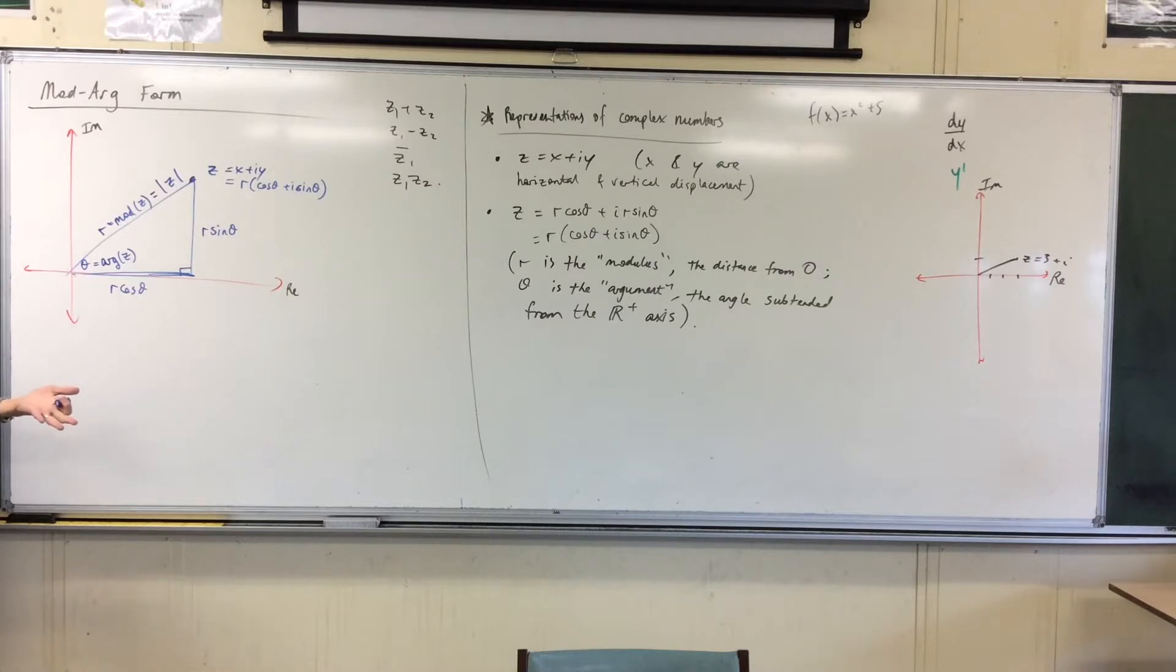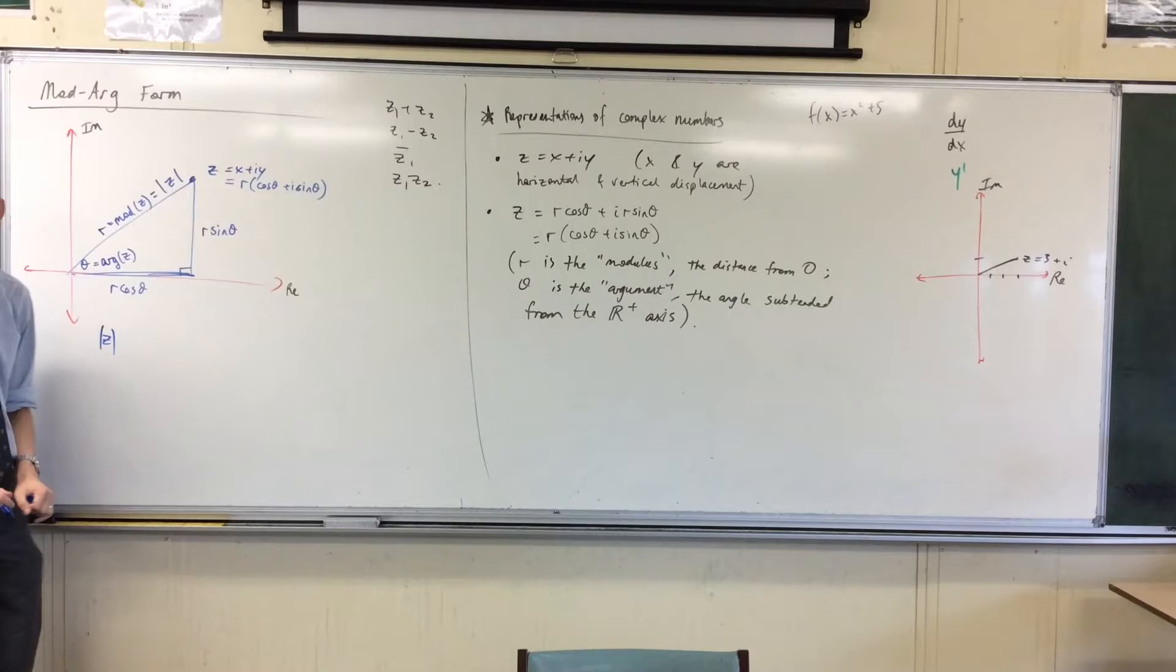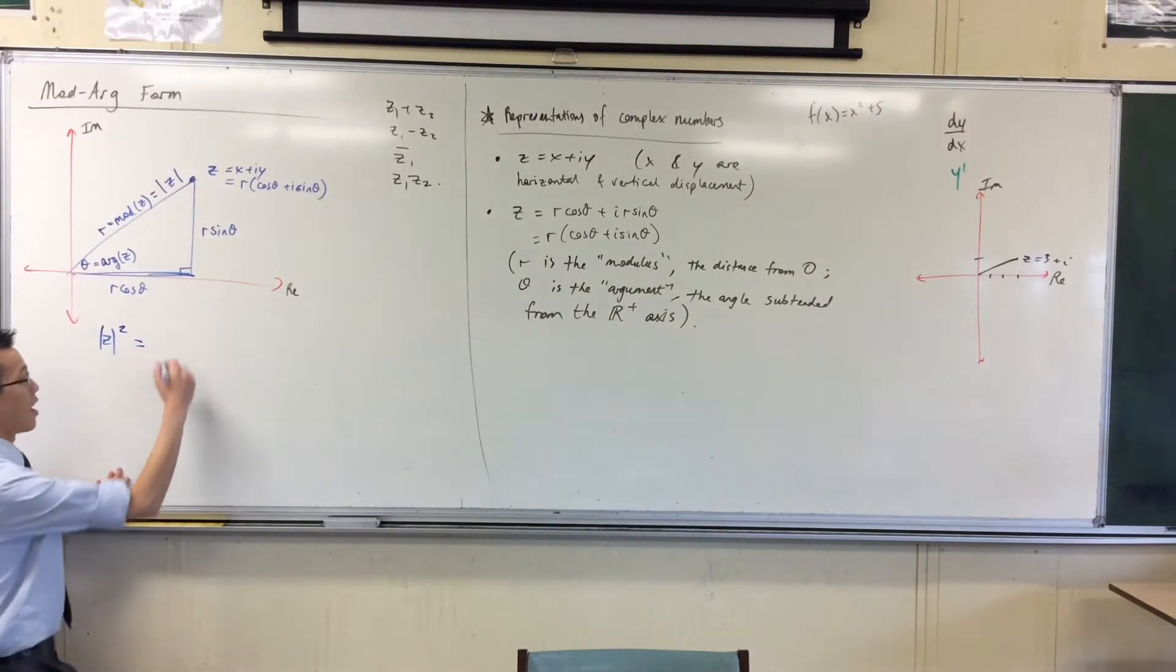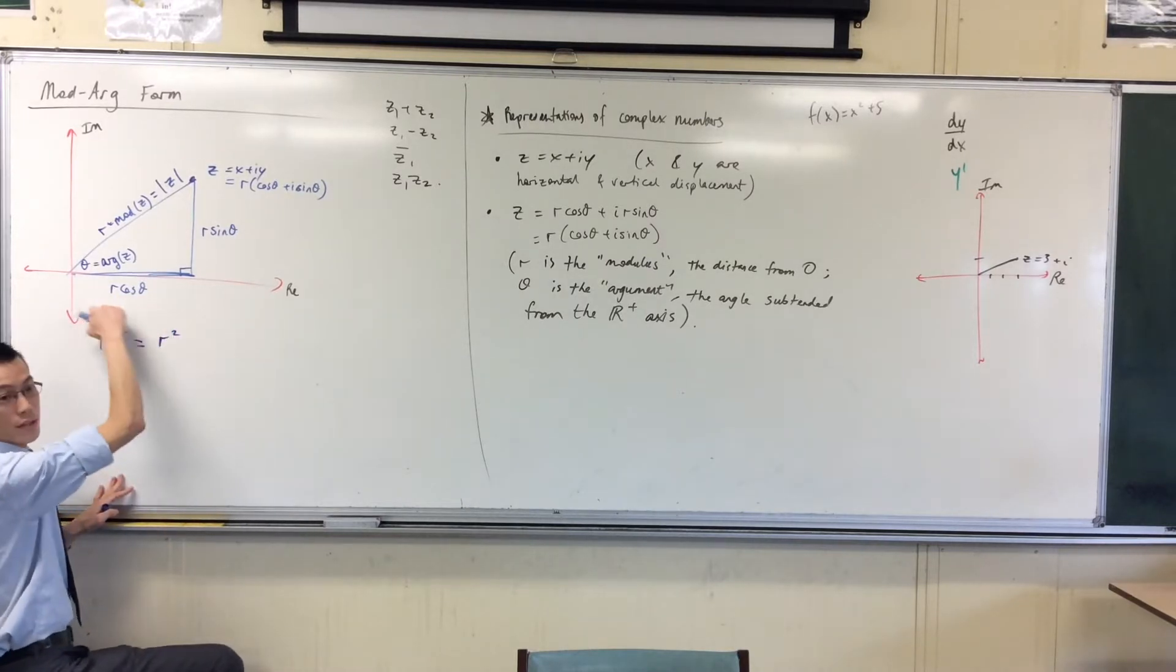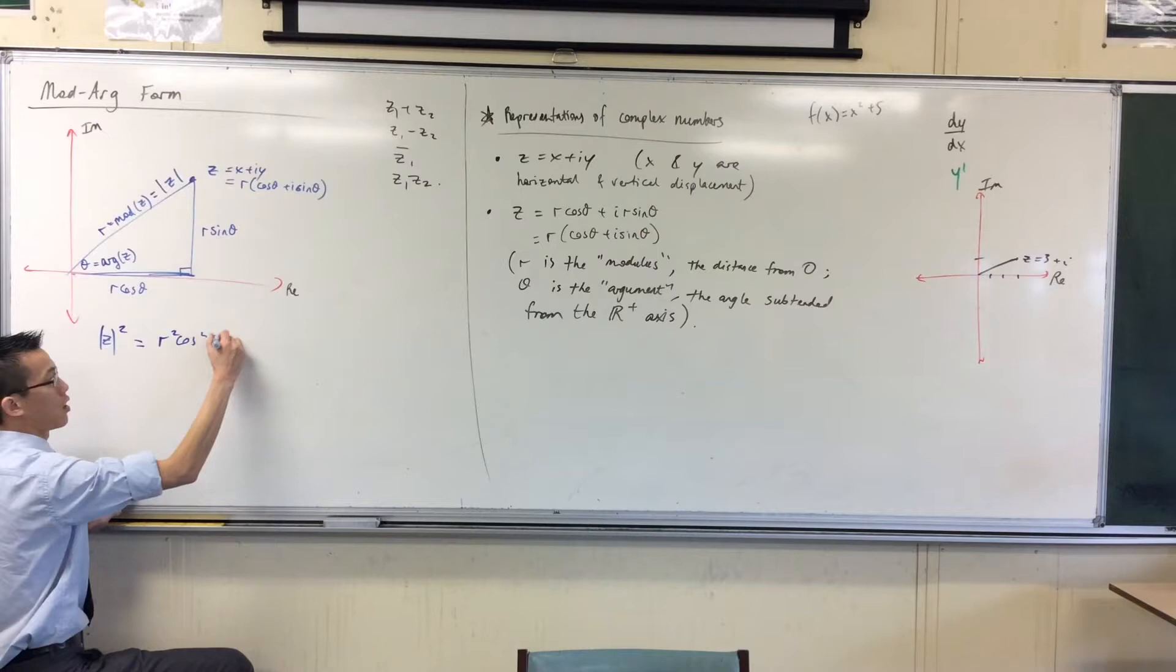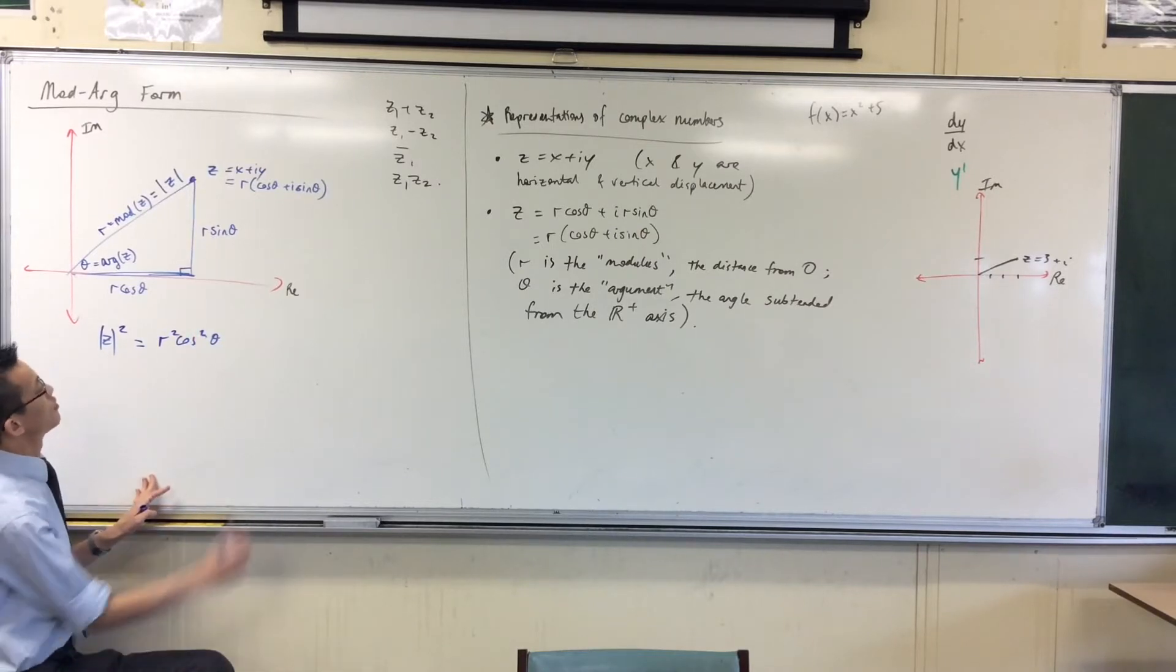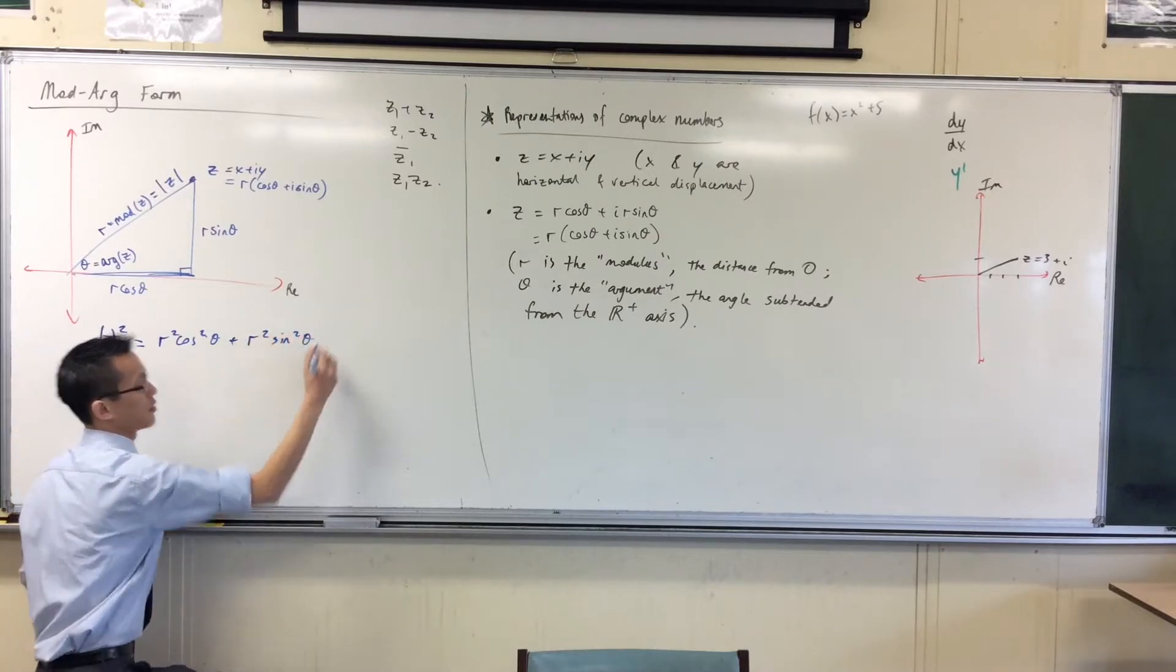Well, let's just pull out our Pythagorean theorem. The absolute value of z - well, let's just write the Pythagorean statement. That squared equals what? R squared. So here is the first side, r squared cos squared theta, so I've squared it, plus r squared sine squared theta.